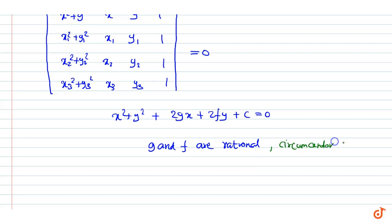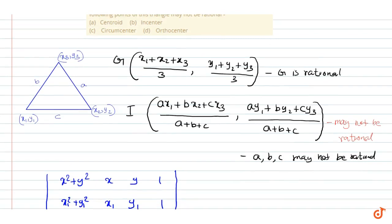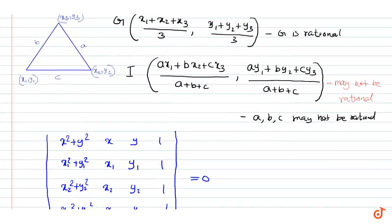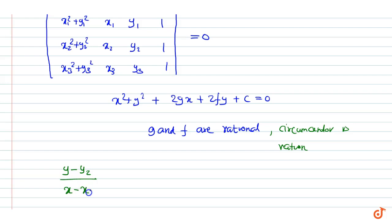Now we will come to the orthocenter. The orthocenter of this triangle is found by solving two equations. One equation is: (y − y2) / (x − x2) = −(x3 − x2) / (y3 − y2), which represents the altitude through vertex Q perpendicular to side PR.